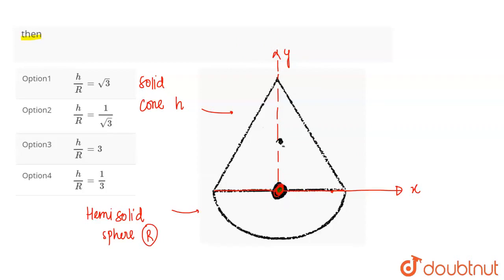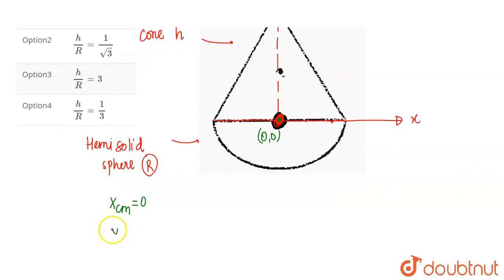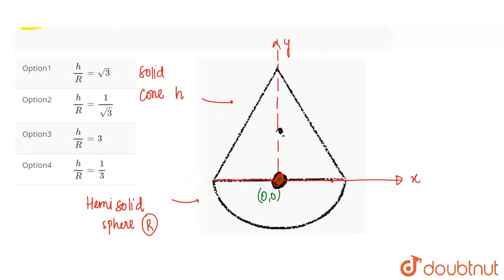पूरे cone और hemisphere का center of mass हमारा origin पर आ जाएगा, और origin के coordinates होते हैं 0,0। तो यहाँ से मैं कह सकता हूँ कि इस पूरे system का x center of mass भी 0 आएगा। लेकिन x center of mass 0 होने से हमें answer नहीं मिलेगा, क्योंकि cone symmetric है along y-axis, तो cone का individual center of mass का x-component भी zero होता।